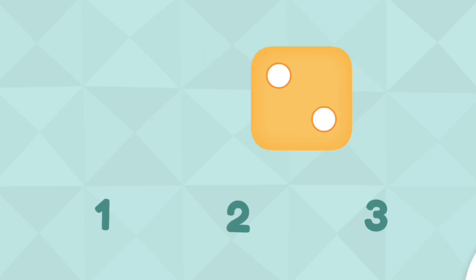How many dots are on the dice? Two. Yay! You counted two dots.